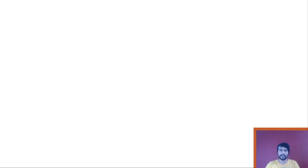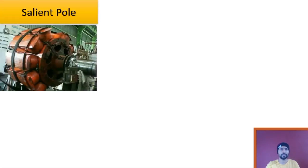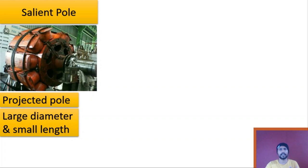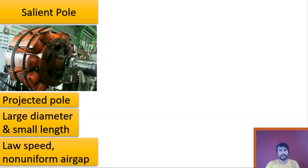Now let's jump into the rotor. First we will look at the salient pole rotor, which looks like this. The another name of salient pole rotor is projected pole rotor, because its poles are projected outside the rotor's inner circumference. The diameter of this rotor is large and the length is small. Because of the heavy mass lumped on the periphery, the speed of this rotor is low, and because of the projected poles, the air gap between stator and rotor is non-uniform.